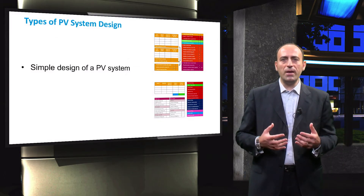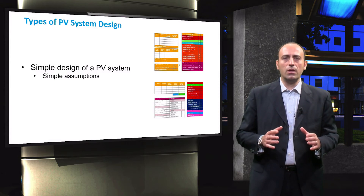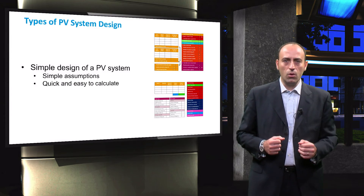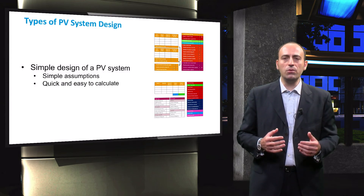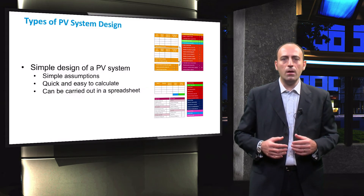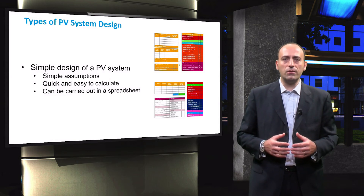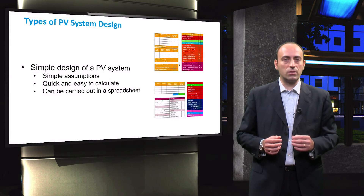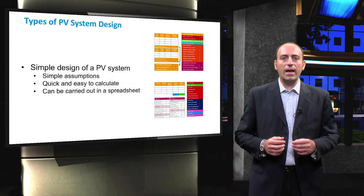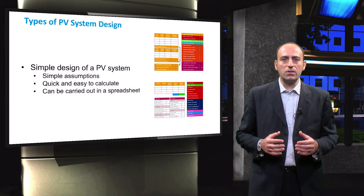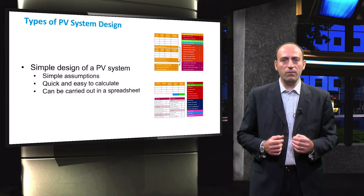The first is the simple design strategy of a PV system. It is based on very simple assumptions and does not take any weather-dependent changes into account. It is quick and easy to work with, and can be executed using a simple spreadsheet application. In such a design approach, the performance of the PV modules and other components are determined by considering only their standard test conditions values and the equivalent sun hours at the system's location. This strategy is normally used to create a first approximation of a PV system design.